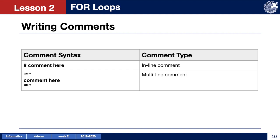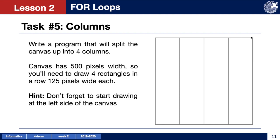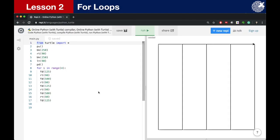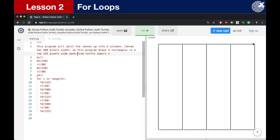Let's look at writing comments in our editor. Let's go to our column task and write some comments to describe what is happening in this code. In the beginning we want to enter a multiline comment describing what the code will do. We will start with three quotation marks and then enter a comment below something like 'this program will split the canvas up into four columns. Canvas has 500 pixels width so this program draws four rectangles in a row 125 pixels wide each,' and I can separate this because it's a multiline comment. We want to end our comment with three more quotation marks.